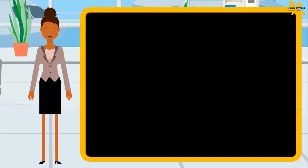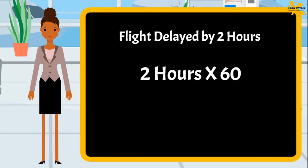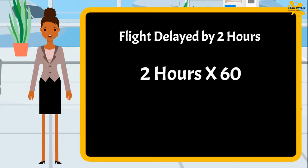I just got an update that my flight got delayed by 2 hours. If I need to calculate the same in minutes, we must multiply the value in hours by 60. So 2 hours multiplied by 60 is equal to 120 minutes. Even you can do it — isn't it manageable?